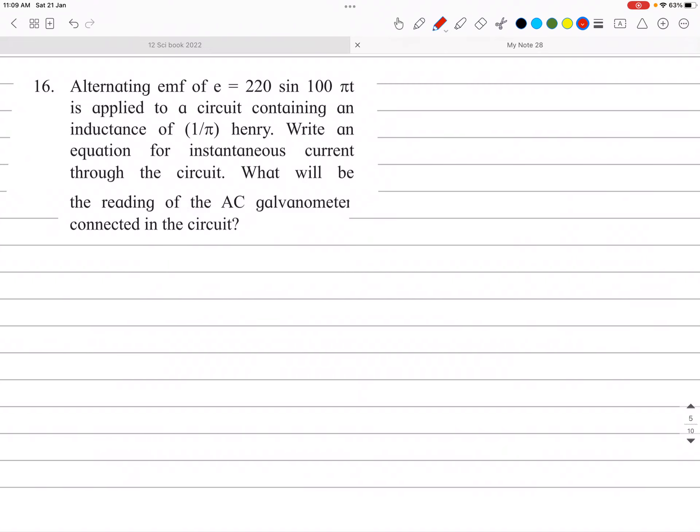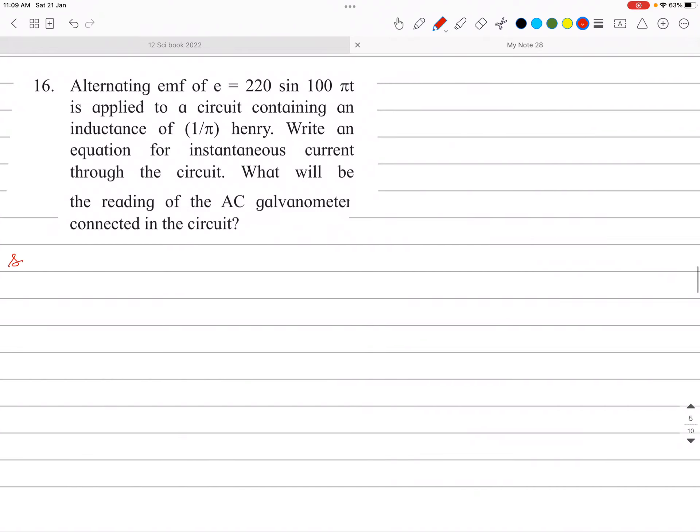Question number 16 from AC circuit. Let's see the solution. The alternating EMF equals 220, so E0 = 220V in the equation E0 sin(100πT). Omega is 100π. Given: E0 = 220 volts, omega = 100π, applied to a circuit containing an inductance of 1/π henry.